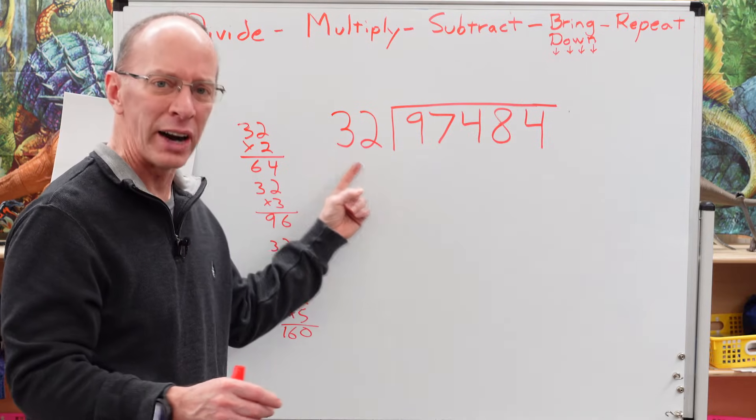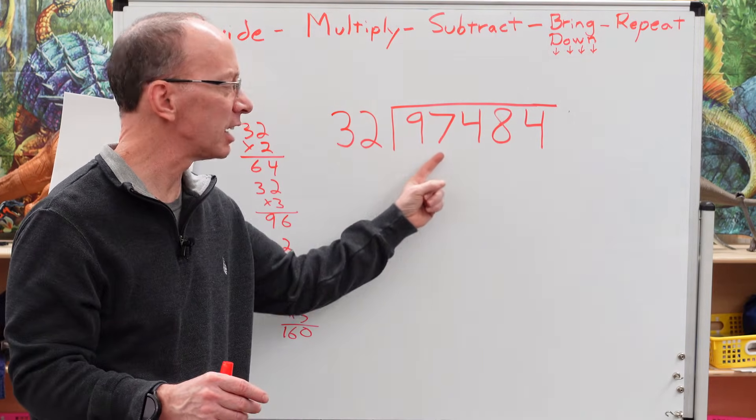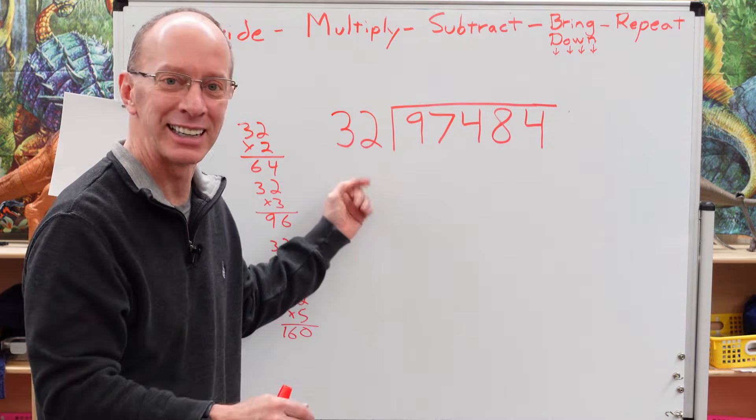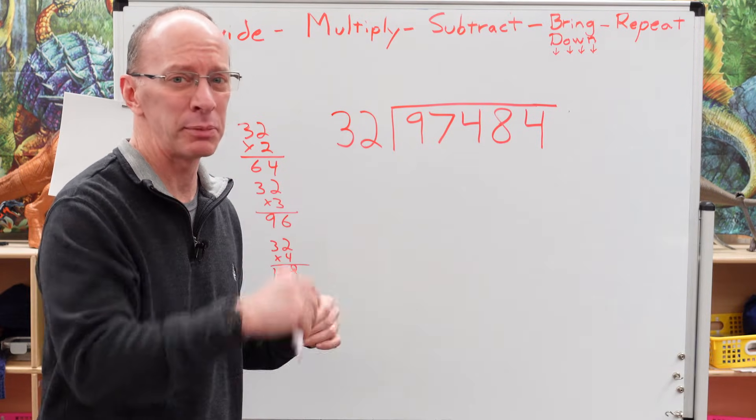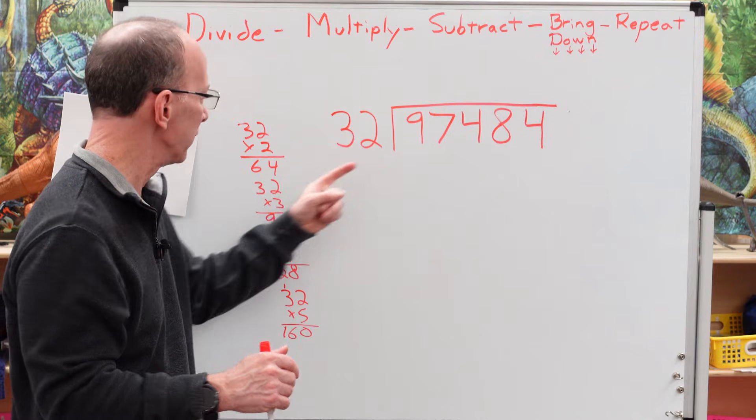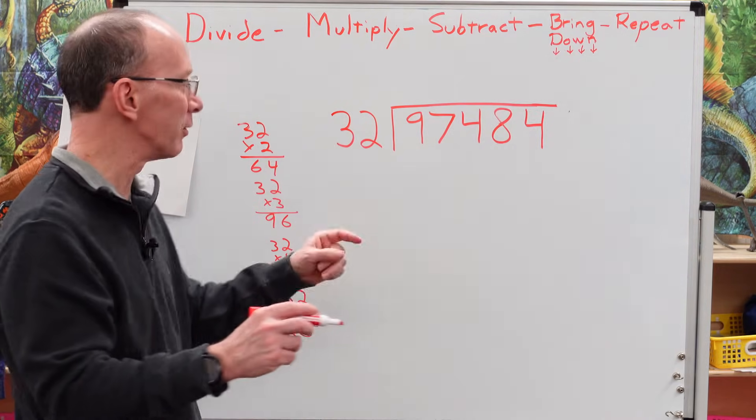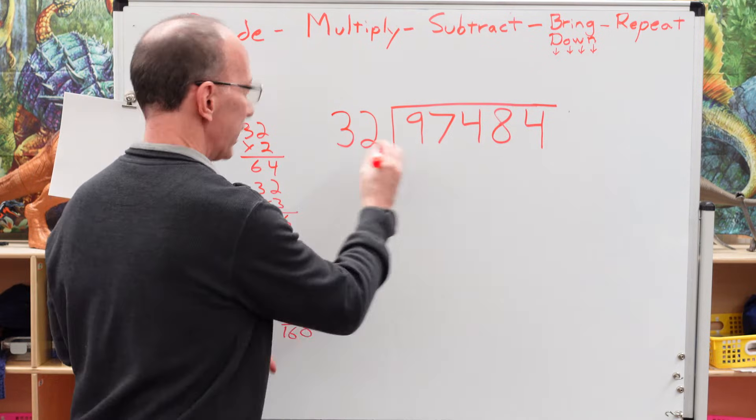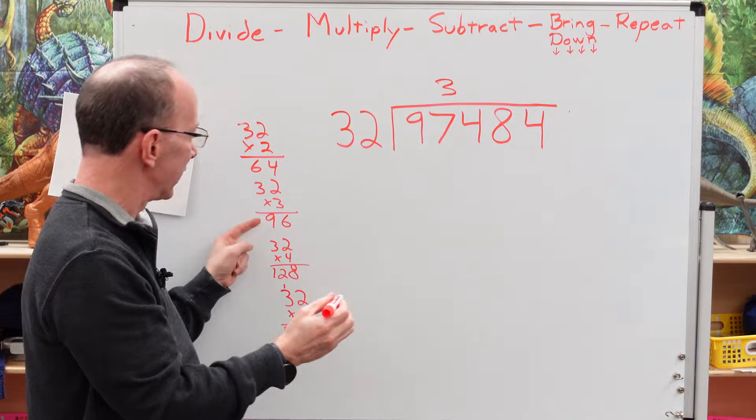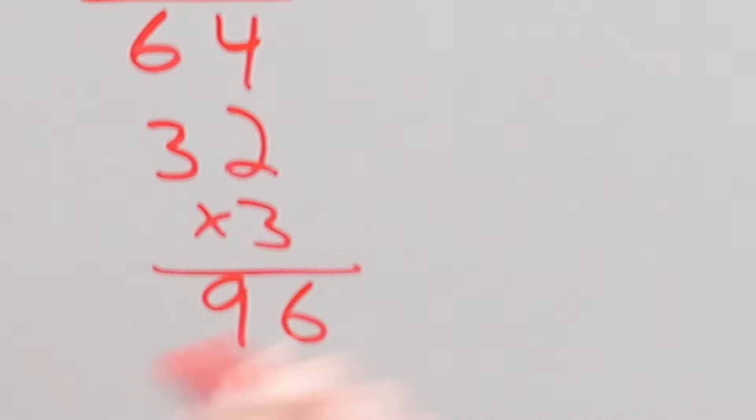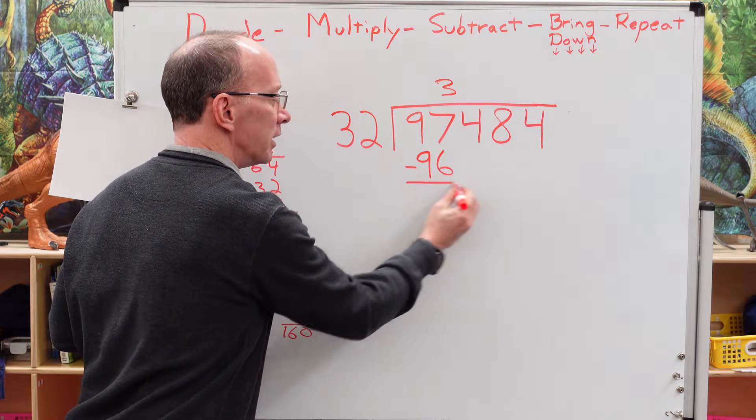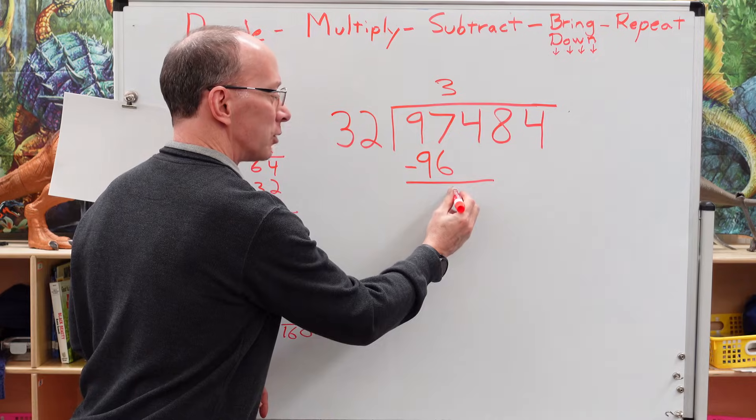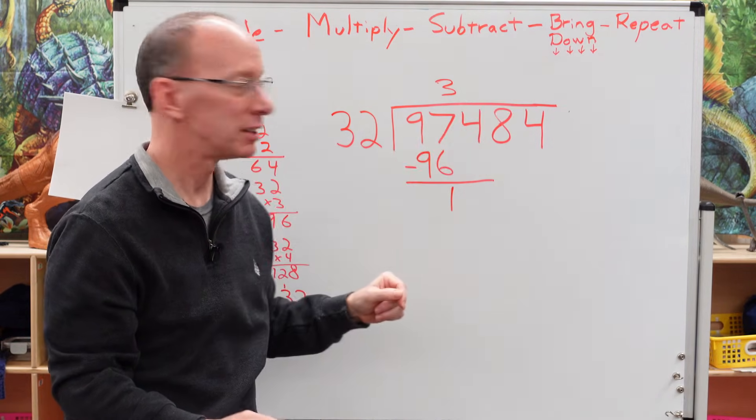Let's get started. If I round 32 to 30 and round 97 to maybe 100 or 90, I would guess 32 can probably go into 97 maybe three times. 32 times 3 is 96. Whoa, hit that one right on the head. So I'm going to put 3 right here. We're going to be multiplying. Three times 32 is 96. And now our next step, subtraction. 97 minus 96. Seven minus six is one. What do we do? We bring the next number down. Bring that next number down, 4. Drop it down.